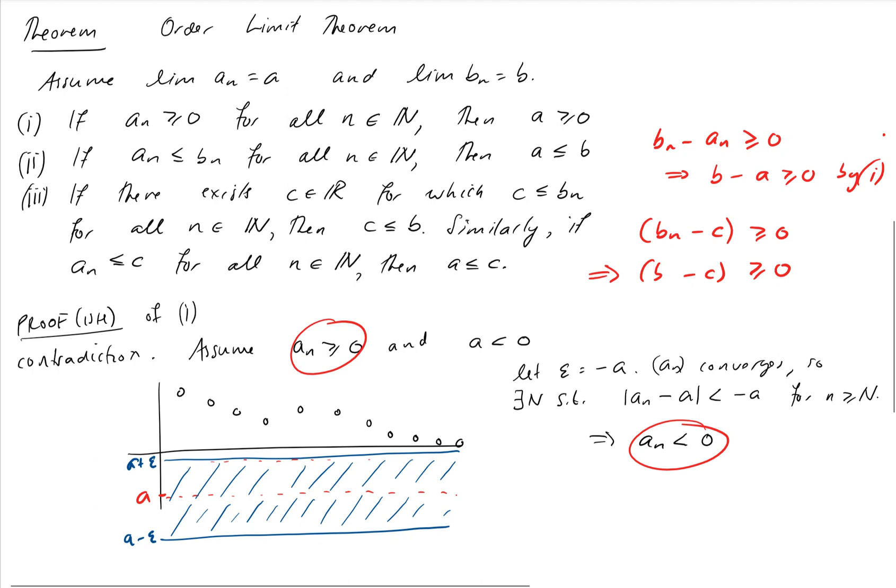So that's all I want to do with the order limit theorems. They can be useful and it just shows that nothing strange happens with regard to sequences swapping sign at the end or anything like that. If you've got this thing here, then their limits behave nicely as well.